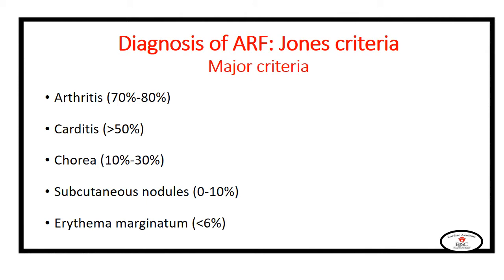For diagnosis of acute rheumatic fever, we have Jones criteria. Jones criteria consists of major and minor features. The major features include arthritis, which is the most commonly encountered presentation. It is characterized by being migratory arthritis affecting weight-bearing, big joints. It shows dramatic response to salicylates and usually leaves no residual effect.